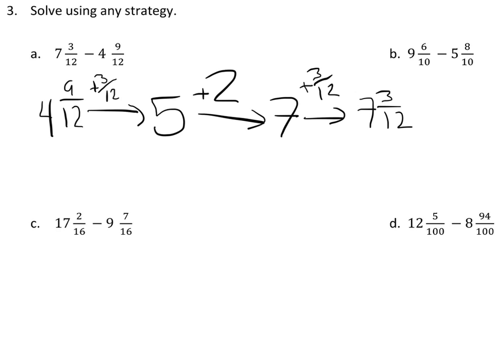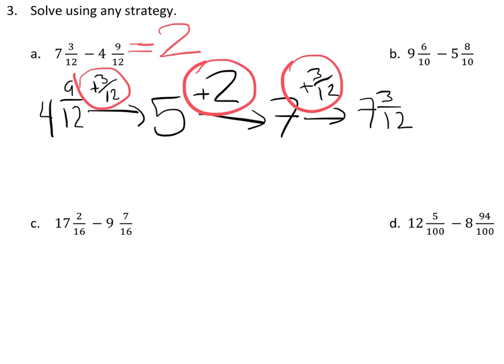Now where's my answer? My answer is the difference between these two numbers, the hops I made, the space between these two numbers on a number line. And if I put these two together, I would have two wholes, and I would have three-twelfths and three-twelfths for six-twelfths, which also could be called half.